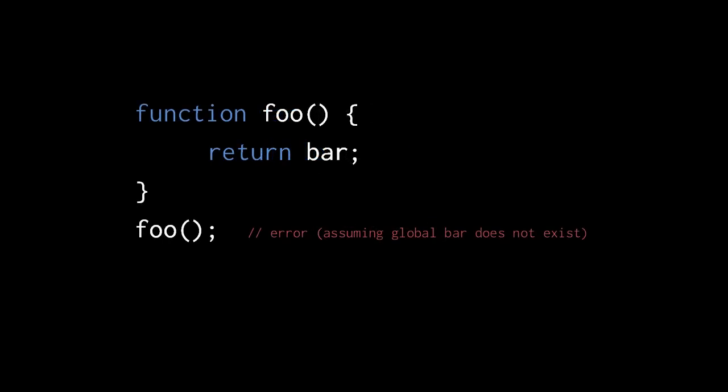When, inside a function, we use a variable name which has not been declared inside that function, JavaScript assumes that the name refers to a global instead of a local. Here, for instance, the function foo declares no local of the name bar, so JavaScript assumes that bar in the return statement refers to a global. However, executing this return statement when a global bar does not actually exist will trigger an error. So here, the call to foo after the function will trigger an error assuming no global named bar was previously created.